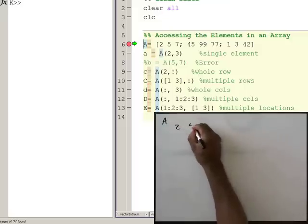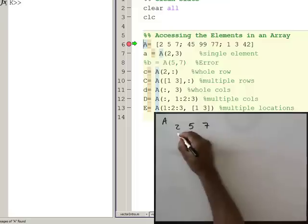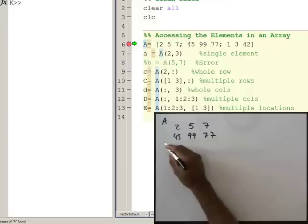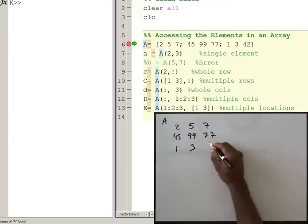I'm just going to write it out here: 2, 5, 7, 45, 99, 77, 1, 3, and 42.